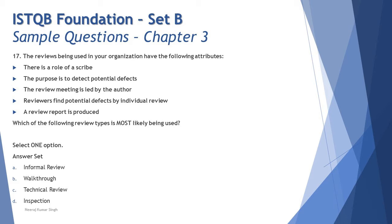Let's talk about each point. The role of scribe is not unique — it is common among walkthrough, technical review, and inspection. The purpose of detecting potential defects is common for all review types. The review meeting being led by the author — I think that's where you get your answer, because a meeting led by the author happens in only one type of review. I'll hold that as a surprise for now.